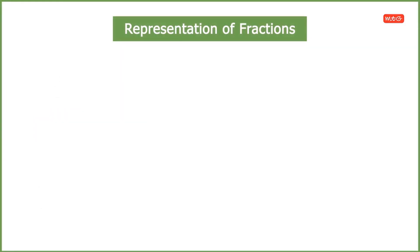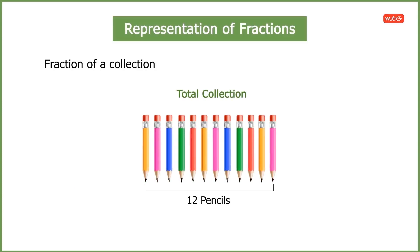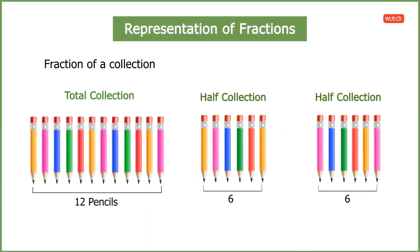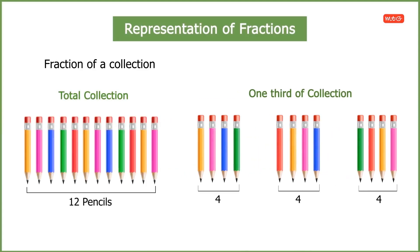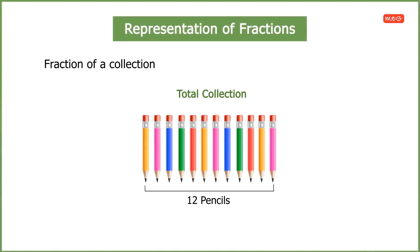Now let us learn how to find the fraction of a collection. Suppose there is a collection of 12 pencils in a box and we have to take out half the number of pencils. Since half of a collection means dividing it into two equal parts, we take out six pencils. Similarly, one-third of 12 pencils means dividing into three equal parts, giving four pencils. One-fourth of 12 pencils means dividing into four equal parts, giving three pencils.